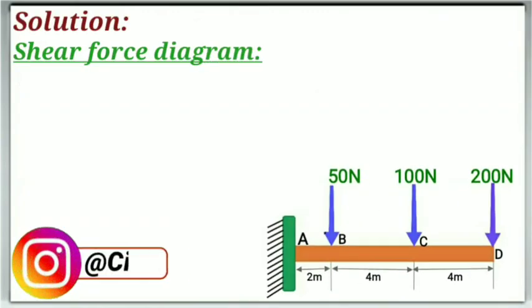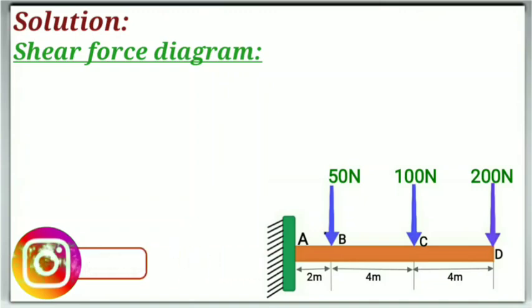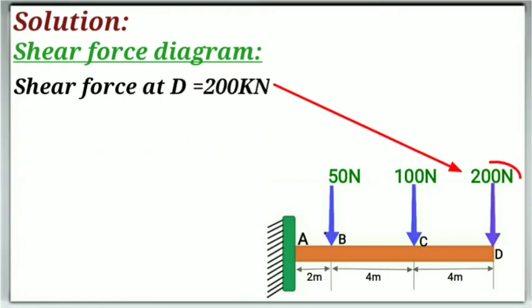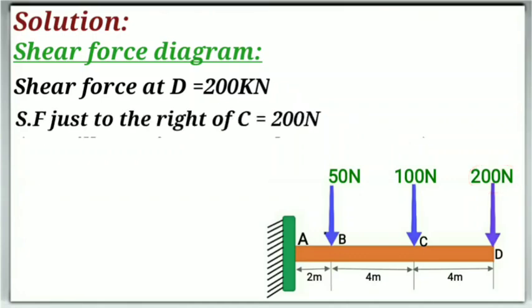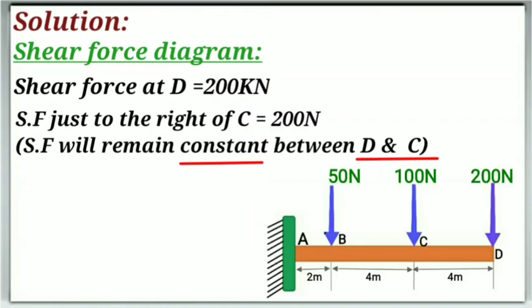In order to draw the shear force diagram we need to calculate the values of shear force at points A, B, C and D, and we will start from point D. Shear force at point D will be equal to 200N, and shear force just to the right of point C will also be equal to 200N, since shear force between point D and C will remain constant as there is no load acting in between.